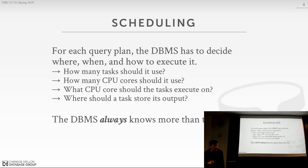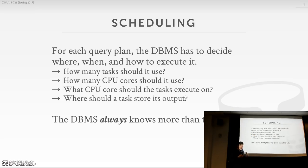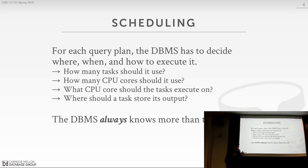The problem we're solving today is: we have a query plan that we can break into operators and operator instances, and we need to figure out how to run this in a multi-threaded, multi-core, or multi-socket environment. We need to figure out how many tasks to use, how many CPU cores to use, where those tasks should execute — which is a big issue — and where to store intermediate results so the next operator can access them efficiently.